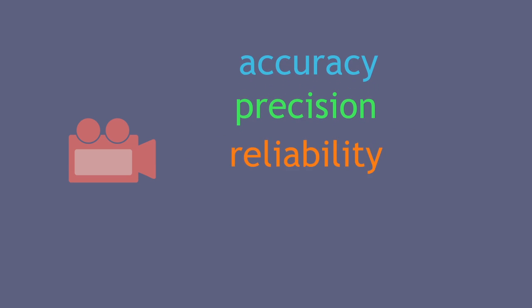In this video we're going to learn about how to use three keywords in experiments. These are accuracy, precision and reliability.